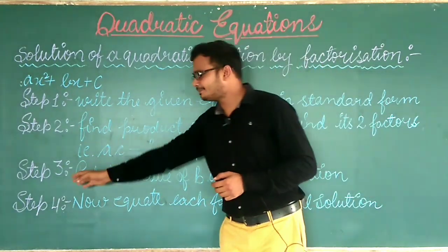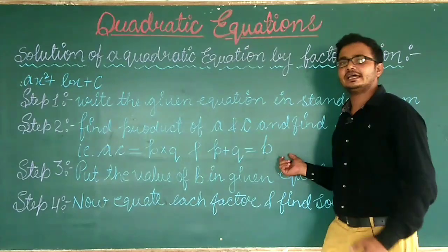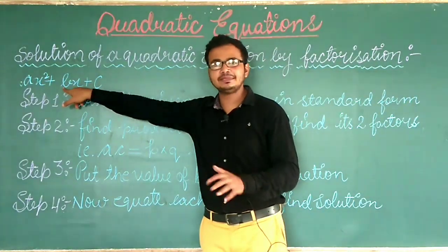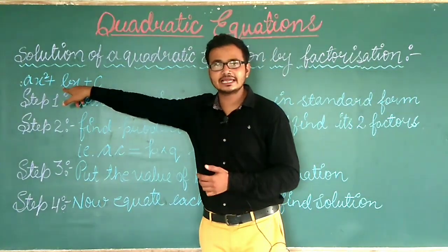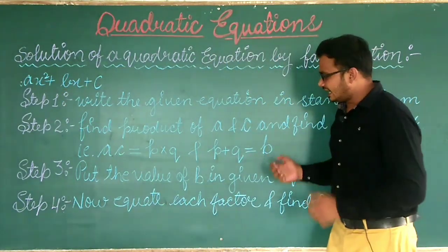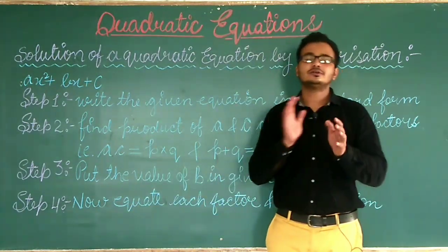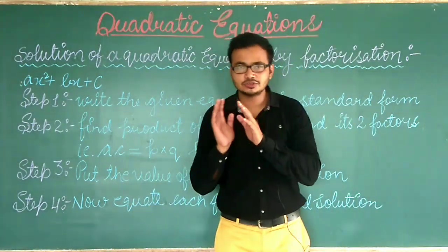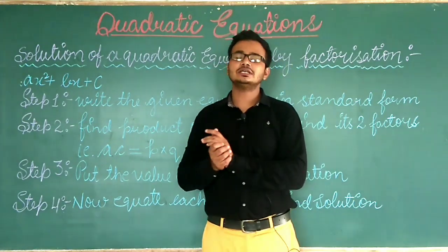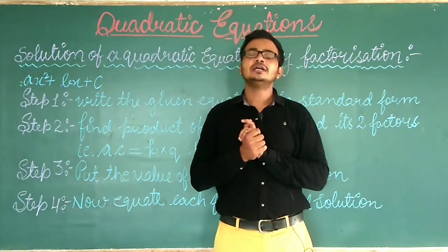Then in the third step, put the value of B — the P plus Q we found — replace B with P plus Q. After that in the fourth step, take common factors, equate that portion to 0, and find the value of X.